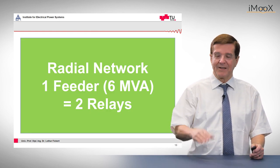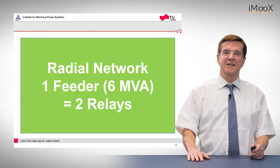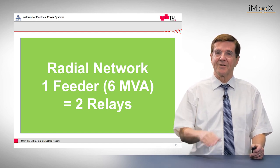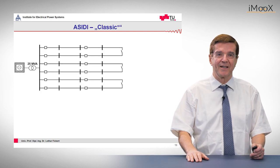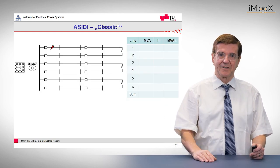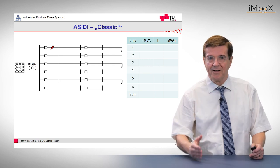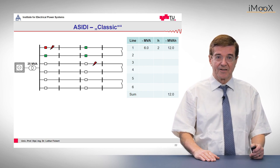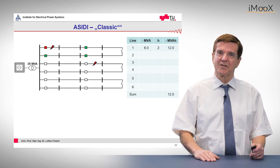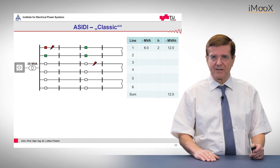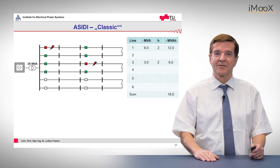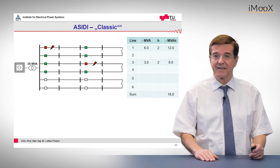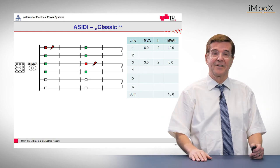Now let's see what happens if we subdivide each feeder into two sections and we have two relays for each feeder. The feeder has the same installed capacity of six MVA and again we have the same sequence of faults. The first fault on feeder number one causes again 12 MVA hours lost. But the second fault is a little better off concerning the lost MVA hours, because here we lose only half of the six MVA per feeder, and this results in six MVA hours lost.